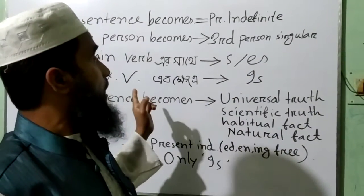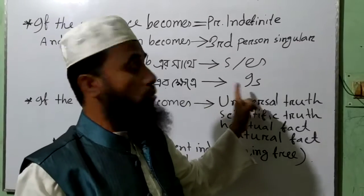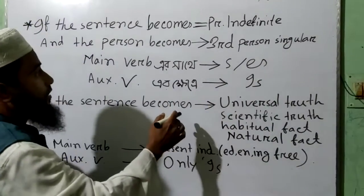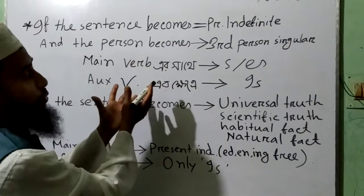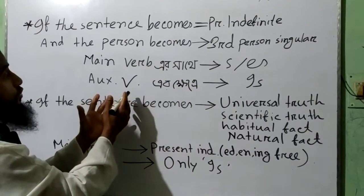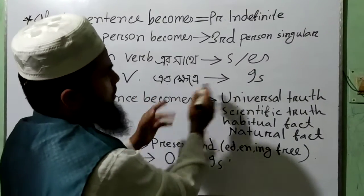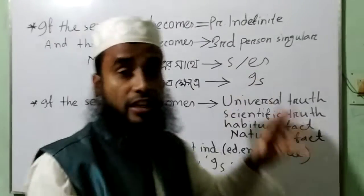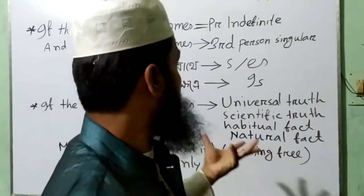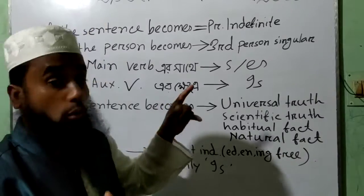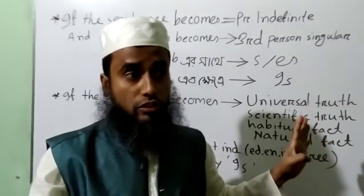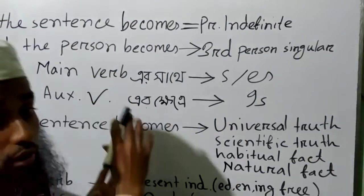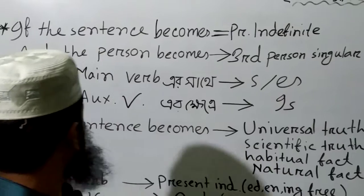In that case, we shall have to use only 'is' — in this sphere we shall have to use 'is' after the subject. But in respect of the main verb, we add 's' or 'es', while for auxiliary verb not 's' or 'es' — only 'is'. This is the main first rule of present indefinite tense.